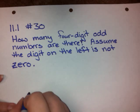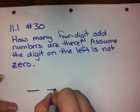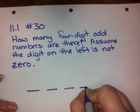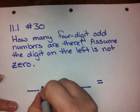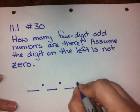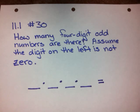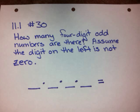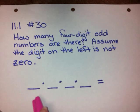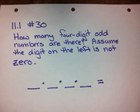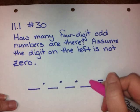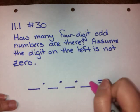So we've got four digits — we need our four blanks, and we're multiplying. It has to be an odd number. Now, for it to be an odd number, you might think all of the digits have to be odd, but that's not the case. Only the last digit has to be odd.